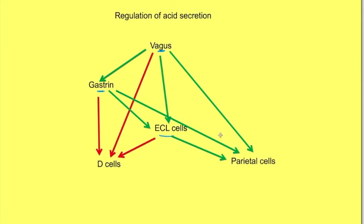But these are all stimulatory effects for release of HCl. So there should be a negative control also on the secretion. The secreted acid itself, that is the H+ ions, have a negative influence on parietal cells since they stimulate D cells causing release of somatostatin.